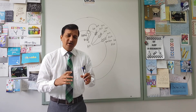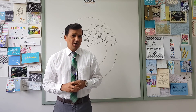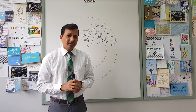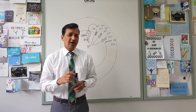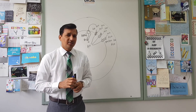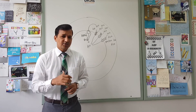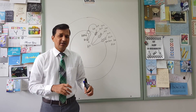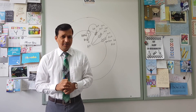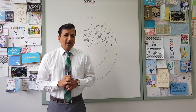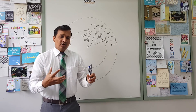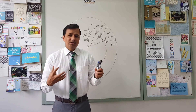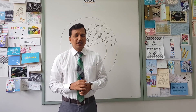Brown adipose tissue is brown because it has a lot of mitochondria. I have a video on brown adipose tissue — the link is in the description below. Now let me explain what exactly happens when thermogenin is opened up.